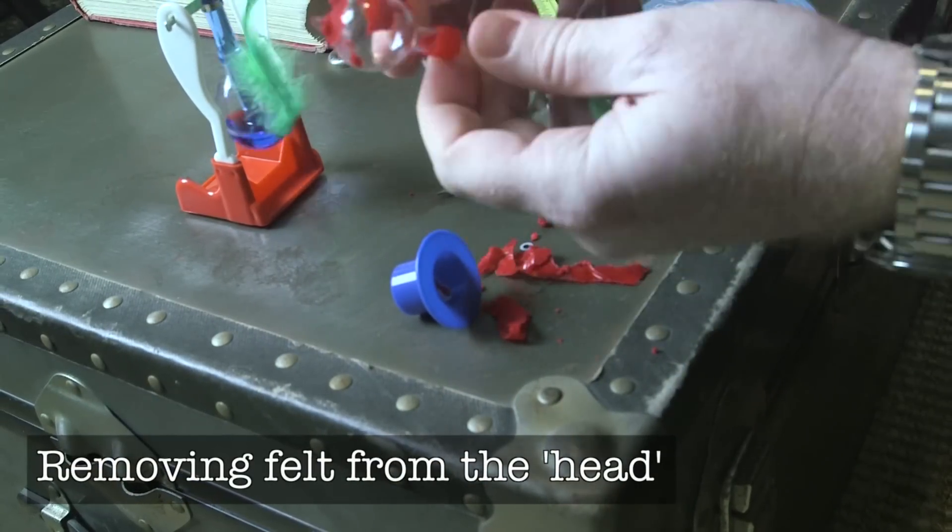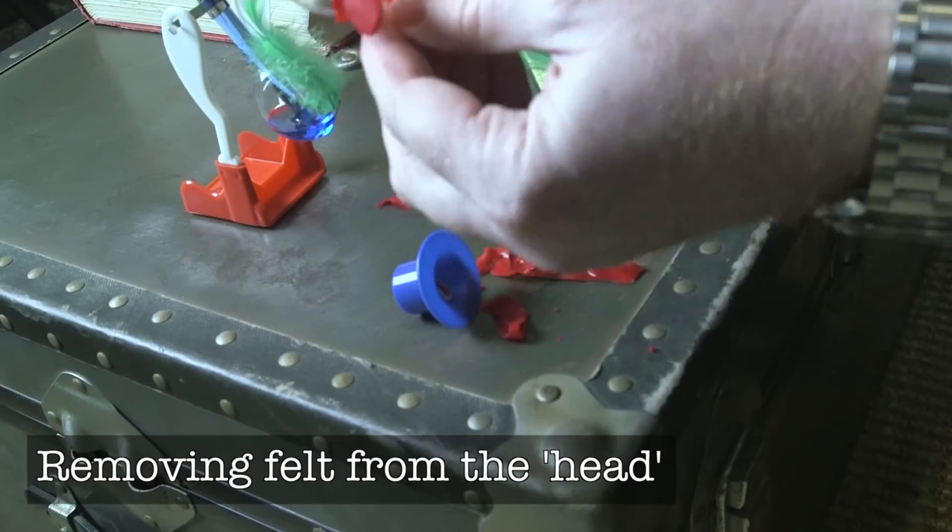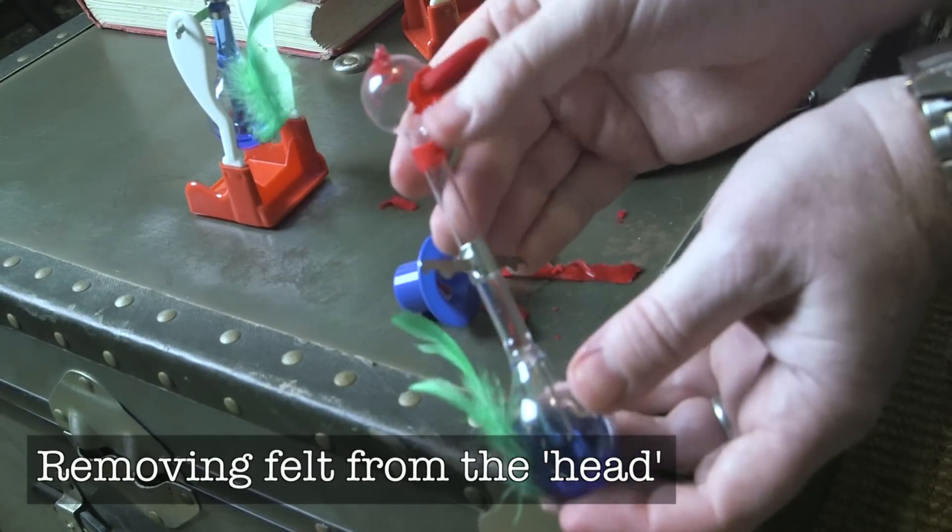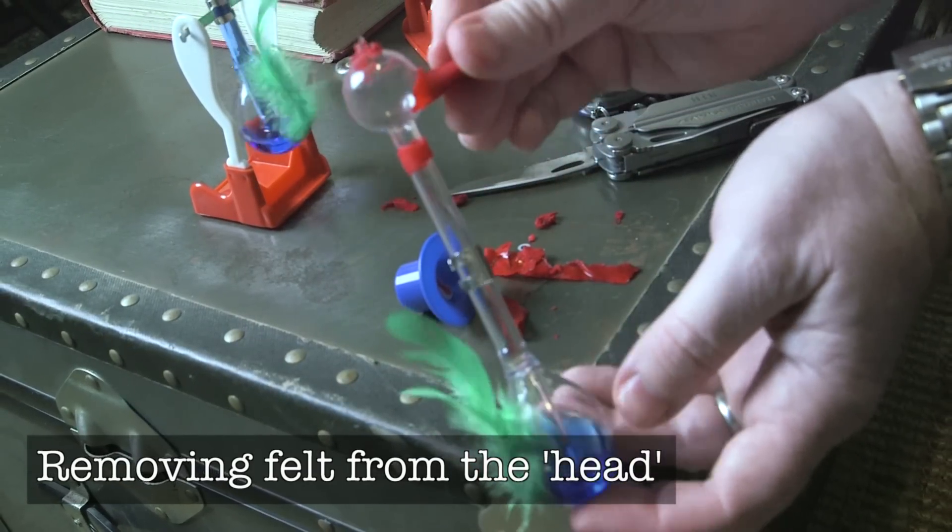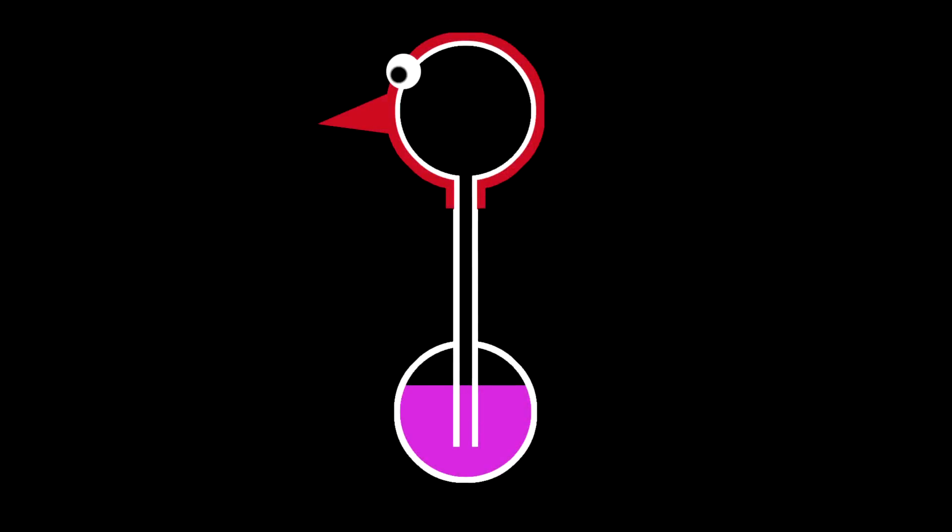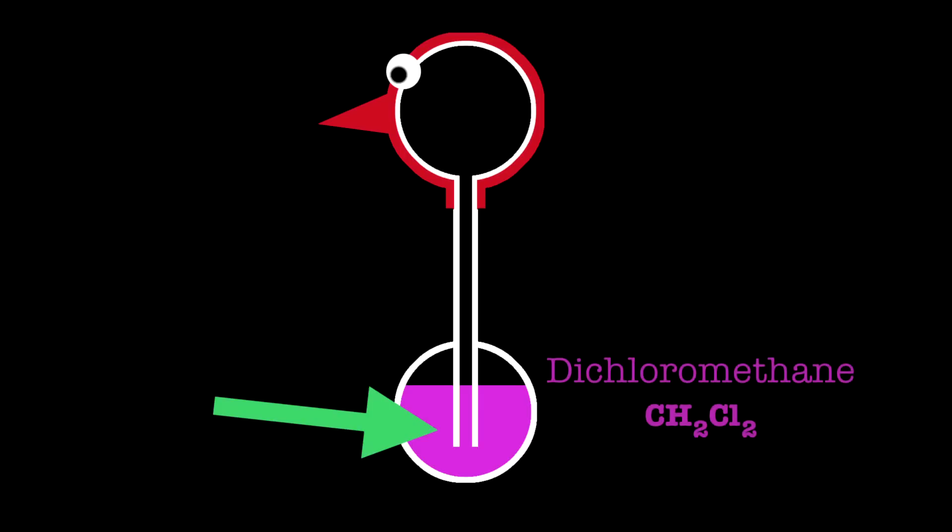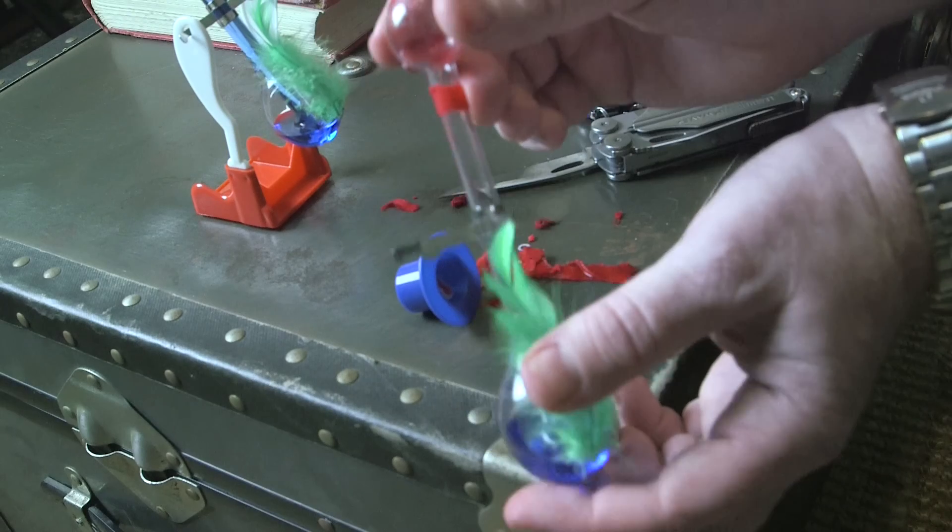But first let's have a look at how they're made. As you can see when the felt head's removed, it's essentially just two glass bulbs connected by a tube. But it's important to note the tube extends down here, and that the liquid inside is something like dichloromethane, a liquid that evaporates easily. It's normally clear, but coloured here so we can see it better.